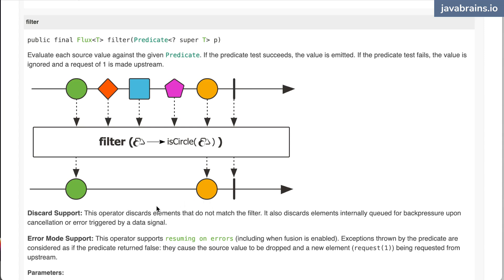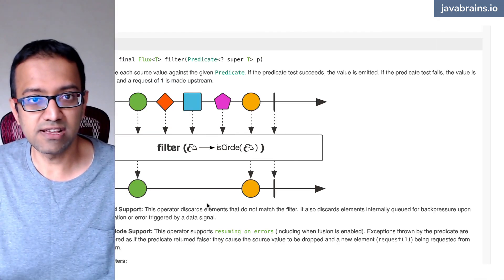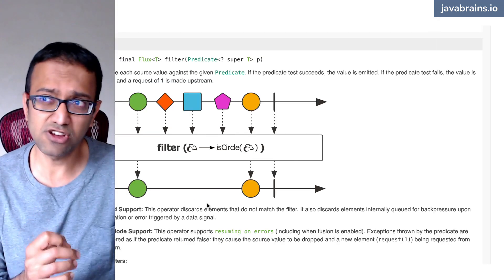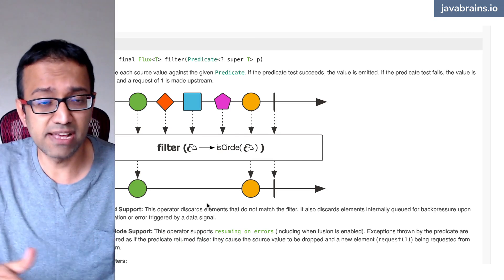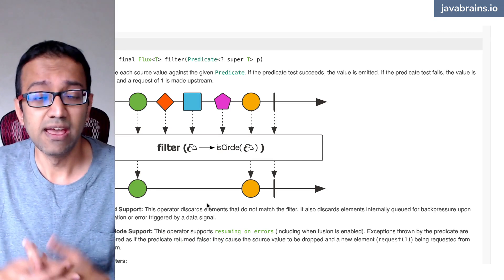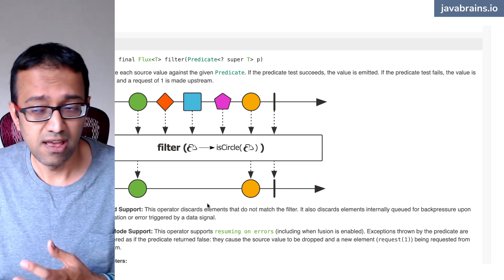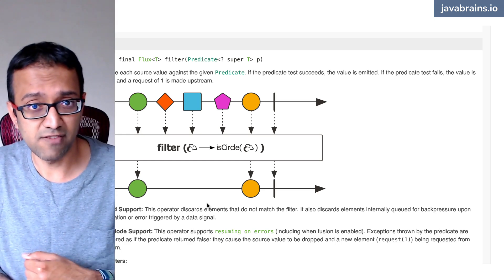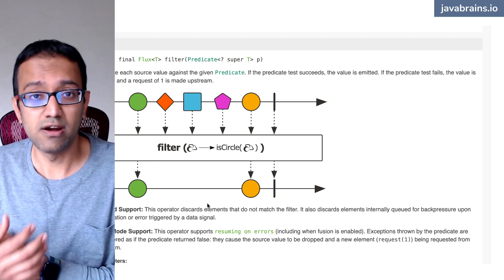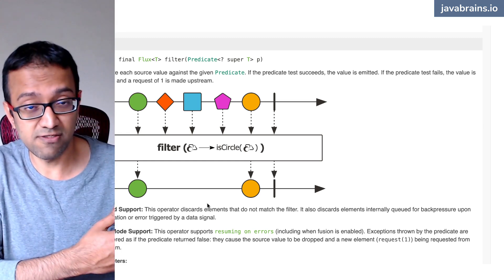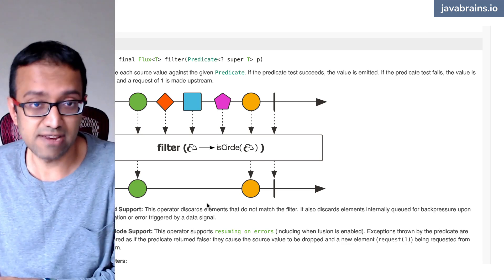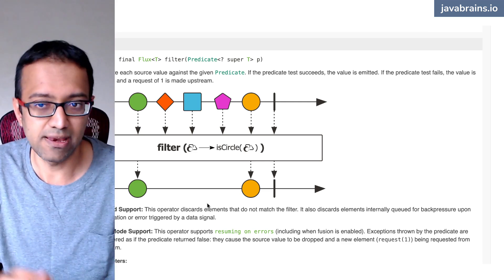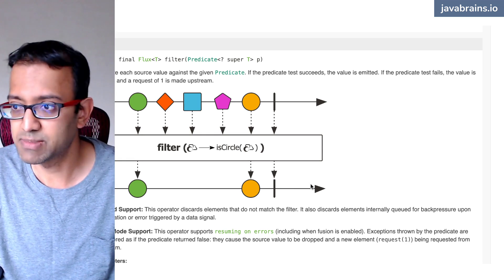So basically what we have done is we have created a new flux which is based off of the original flux, but it has a different set of items. It releases a new item, it pushes a new item when the predicate is true. The corresponding value gets pushed, or there could be more items in the original flux, which then means fewer items here, because those items don't meet the predicate.